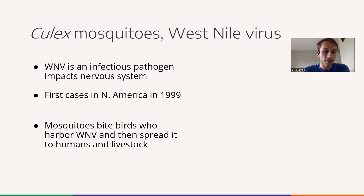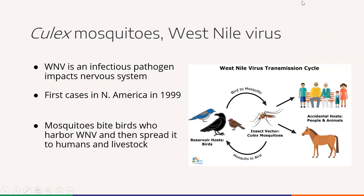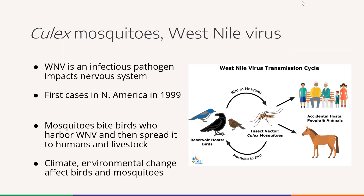So how does this operate? Essentially mosquitoes will bite birds who harbor West Nile virus, and then with the West Nile virus in their saliva they'll go on to bite humans or livestock. This transmission cycle is depicted on the right. We have a cycle called an enzootic cycle in which the virus is maintained naturally in the environment. There are about 400 bird species that can harbor the virus, and mosquitoes will keep biting the birds and spreading it through bird populations. In some instances they will bite accidental hosts — humans and horses — and this can cause severe symptoms. Because it's maintained in this enzootic cycle, climate and environmental change is important in how it might affect the bird or mosquito populations.